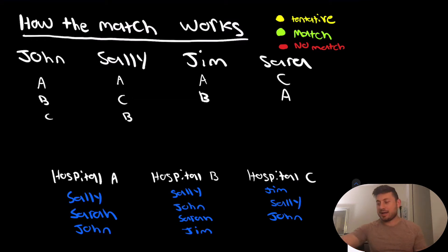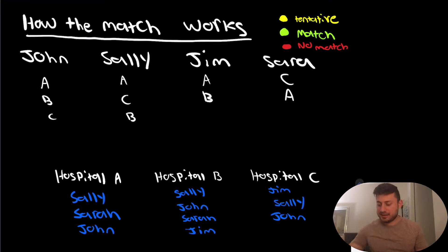So if we go over to my iPad, I have a sample match scenario. We have four applicants: John, Sally, Jim, and Sarah. And these four applicants are all applying to residency programs amongst three different hospitals. We have hospital A, B, and C.